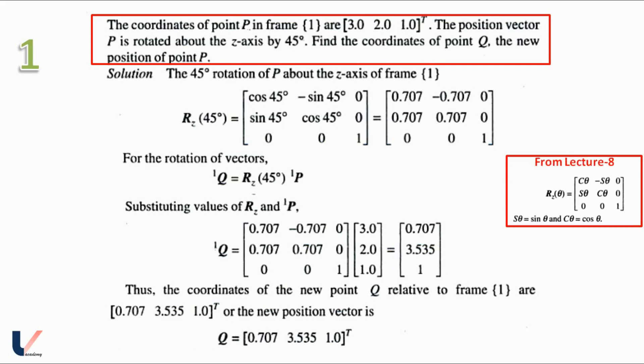From lecture number 8 we know that the rotation matrix about the z-axis is given by cos theta minus sine theta zero, sine theta cos theta zero, and zero zero one. Substituting 45 degrees in this matrix we will get Rz 45 degrees as this. For the rotation of the vectors we know that 1Q is equal to Rz 45 degrees times 1P. Rz 45 degrees we have already found and 1P is given in the question as 3, 2, 1. So substituting the values of Rz and 1P in 1Q we will get 1Q as 0.707, 3.535 and 1.